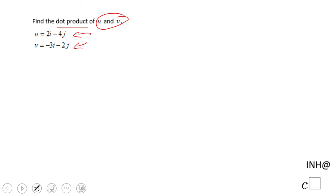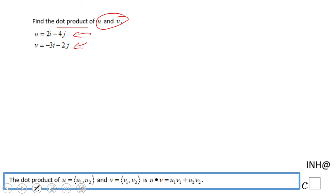How are we going to do that? We're going to use this form here. The first thing I'll do is change these vectors into component form. So vector u will be <2, -4>.